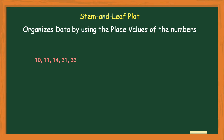A stem and leaf plot organizes your numbers in order from least to greatest. So the first thing you want to do when given a list of numbers is put them in order from least to greatest — and here they're already in that order. Then we're going to draw a t-chart, because a stem and leaf plot is graphed using a t-chart. You draw the vertical line down, the horizontal line across, and on the left side you write 'stem' and on the right side you put 'leaf.'